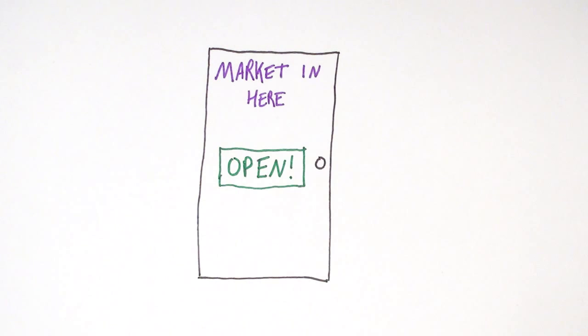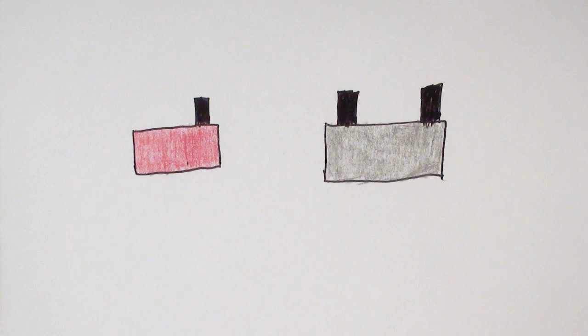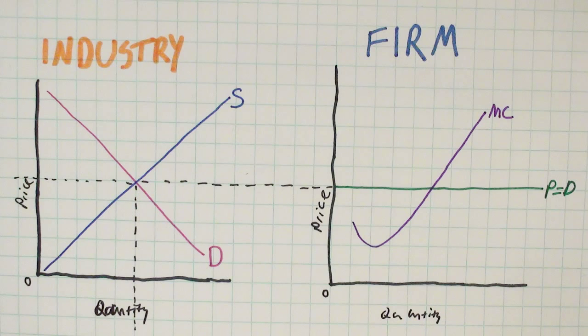Third, there need to be no barriers to enter or leave the market. That is, it's easy for a new firm to start up or for an old one to shut down. This helps to ensure that the market always produces at the right level, but we'll get to that in a second.